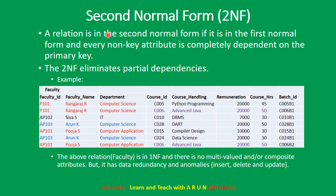A relation is in the Second Normal Form if it is in the First Normal Form and every non-key attribute is completely dependent on the primary key. The Second Normal Form eliminates partial dependencies, so non-key attributes must be completely dependent on the primary key.